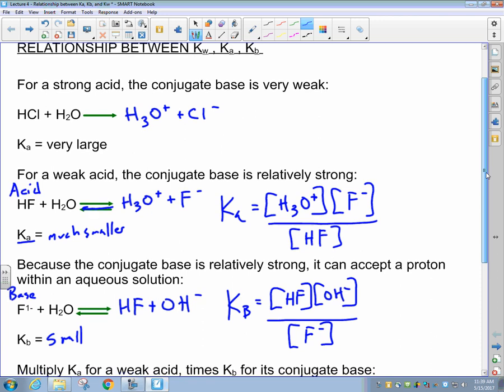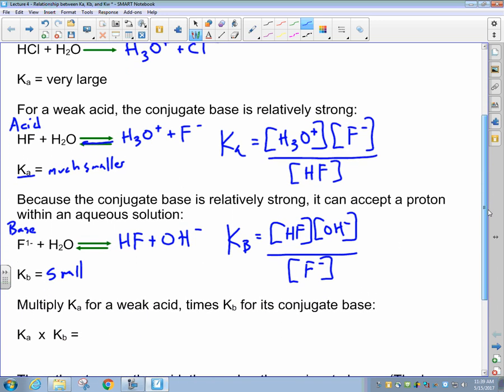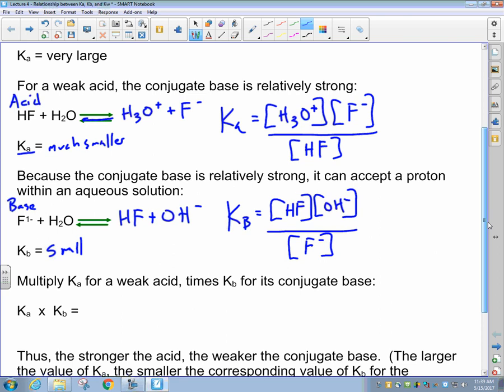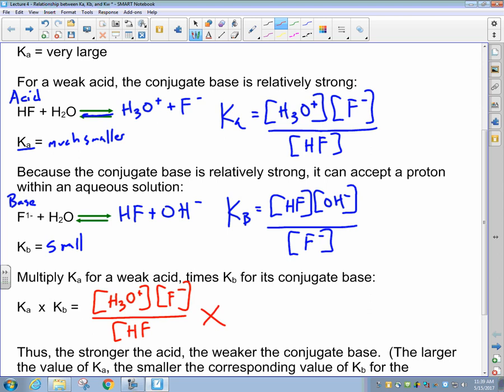If we were to take these two Ka and Kb expressions and multiply them by one another, we get something very interesting. Let's take these two equations. We have H3O positive times F negative over HF multiplied by the HF and the OH concentration over F negative.